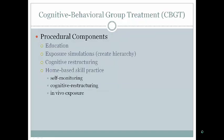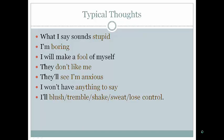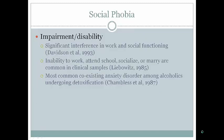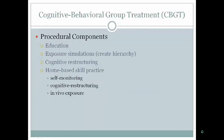In terms of procedural components, there's an educational psychoeducation component explaining the theory behind social anxiety disorder and how treatment works. You then create exposure simulations by developing a hierarchy. Cognitive restructuring is done around beliefs like 'What I say sounds stupid' or 'I'm going to make a fool of myself.' There's also home-based practice involving self-monitoring of anxiety, thought processes, cognitive restructuring, and in vivo exposure.